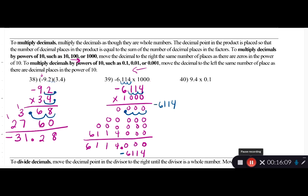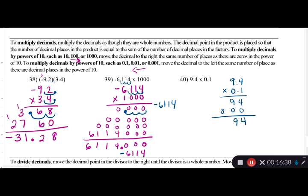If memorization isn't your strength, just multiply it out. Example: 9.4 times 0.1. Multiply normally: 1 times 4 is 4, 1 times 9 is 9; then 0 times 4 and 0 times 9 give zeros. I have one decimal place from 9.4 and one from 0.1 — two total — so I place the decimal two places from the right. Answer: 0.94.